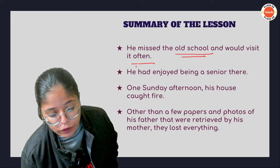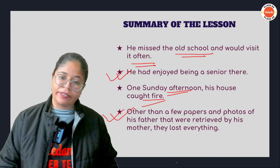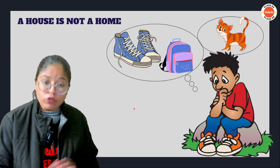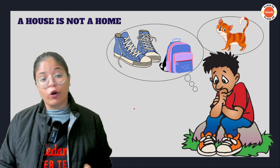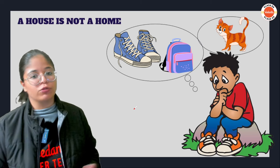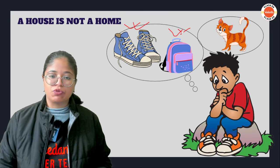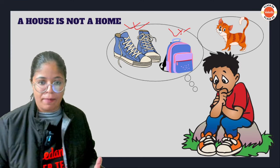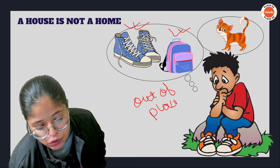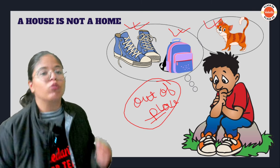He used to miss his old school and would visit there, where he felt like a senior. Then one Sunday afternoon his house caught fire. His mom, who didn't have money and couldn't even access the bank since the documents were gone, stayed with his grandfather and grandmother. The next morning she sends him to school even though he has no shoes, no bag, and no uniform. She sends him hoping it will keep him somewhat distracted, but when he gets there he feels even more out of place.